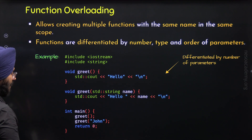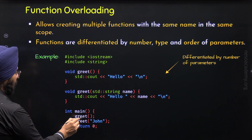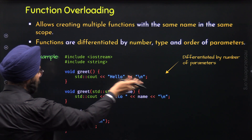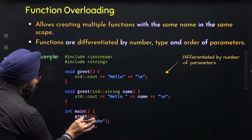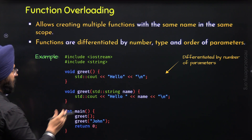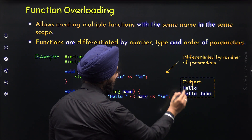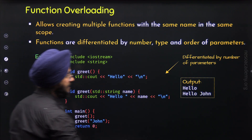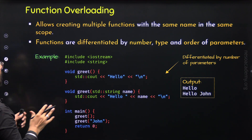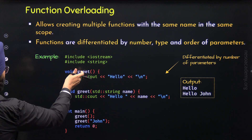These two functions are differentiated by number of parameters — zero versus one. The second greet function prints hello along with the name passed to it. Inside the main function, calling greet with no argument resolves to the first definition and we get hello on the screen. Calling greet with the string john resolves to the second definition and we get hello john on the screen. When we execute this program, the output is hello and hello john, each on a new line because of the backslash n. With this, we have understood how to define functions differentiated by number of parameters.